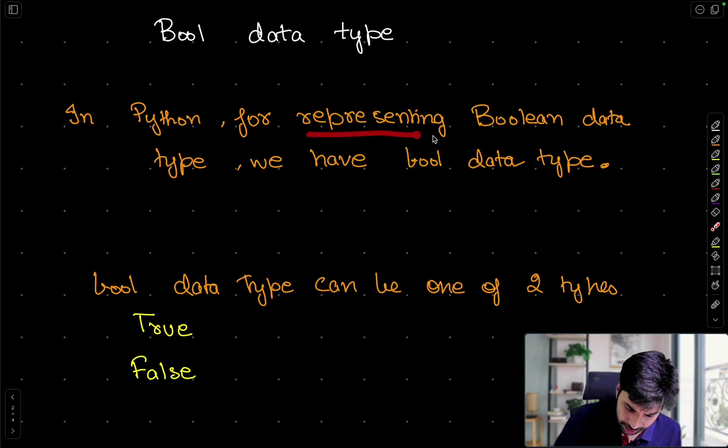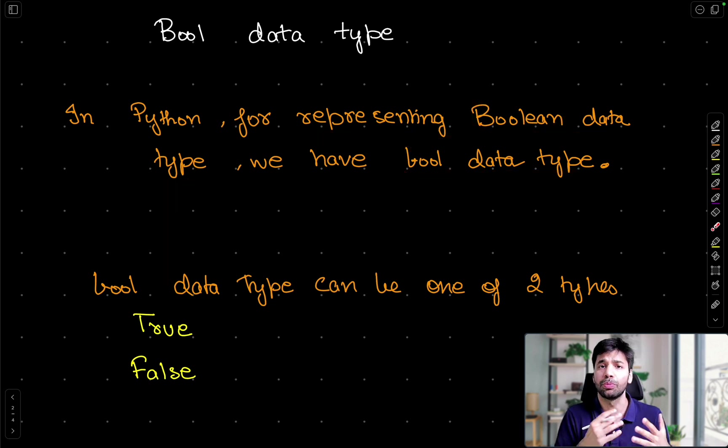In Python for representing the Boolean data type, we have the bool data type. So the overall concept is known as Boolean, and for this we have the bool data type. Now to intuitively understand bool, you can think of a light switch. The way we can turn off or turn on the light switch, there is no in-between state. Whenever we are asking a question where the answer is either true or false, that is where it is used in the industry.